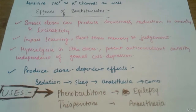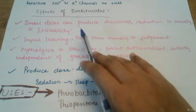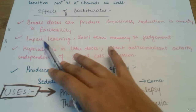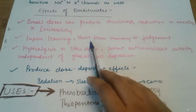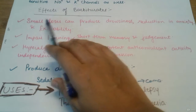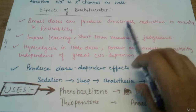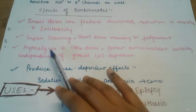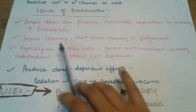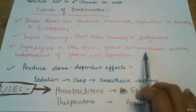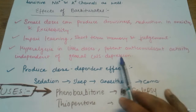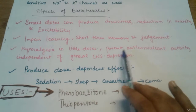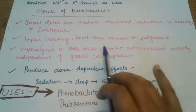Regarding the effects of barbiturates: small doses produce drowsiness, reduction in anxiety and excitability, and impair learning, short-term memory, and judgment. In very small doses they also act as effective analgesics and show hyperalgesia-like pain relief. Barbiturates also have potent anticonvulsant activity independent of the degree of CNS depression, and therefore they are also used clinically for this purpose.